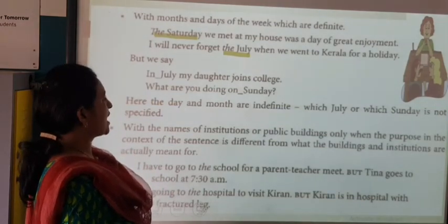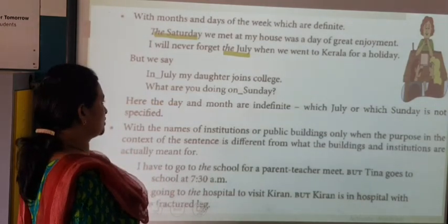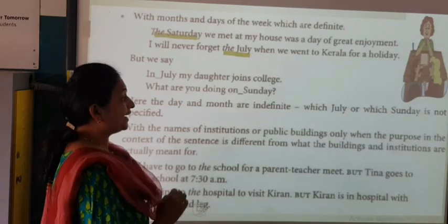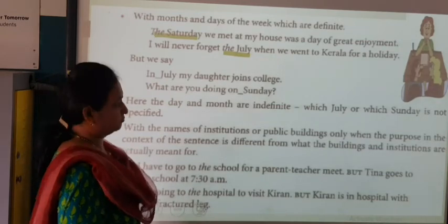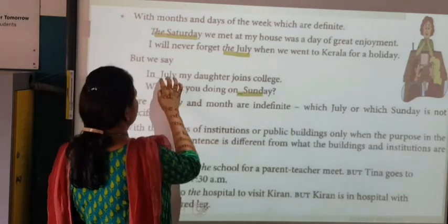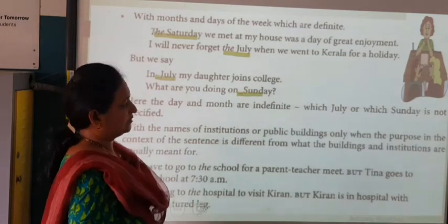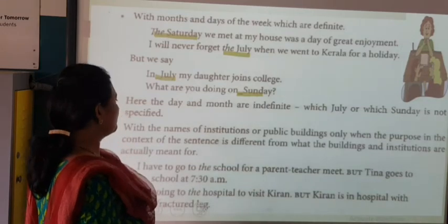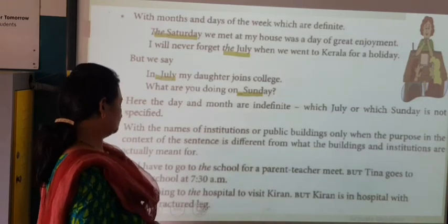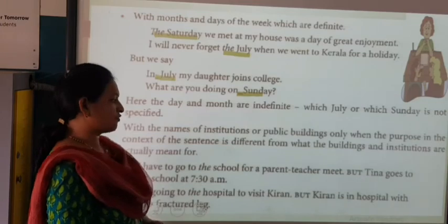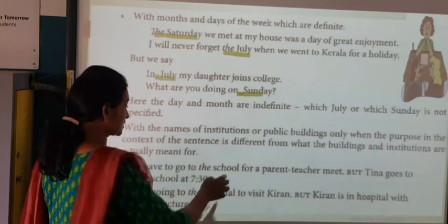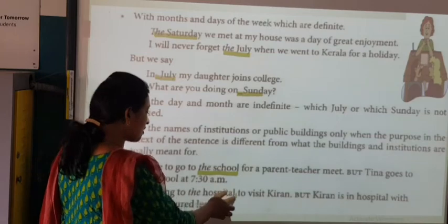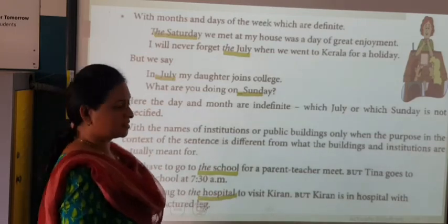But we say: 'In July my daughter joins college' and 'What are you doing on Sunday?' — here the day and month are indefinite, so no 'the' is used. Which July or which Sunday is not mentioned. With the names of institutions: 'I have to go to the school for a parent-teacher meet.' 'I am going to the hospital to visit Kiran.'